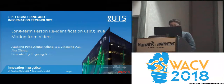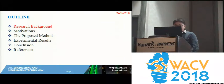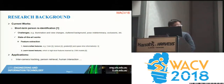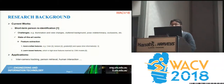Good evening everyone. I will talk about my work about long-term person re-identification using true motion from videos. For person re-identification there's a lot of work in recent years and most of them focus on short-term person re-identification. Short-term means that given a surveillance camera you have to find the same person on different camera views, and most of the time there's no overlap between the cameras.